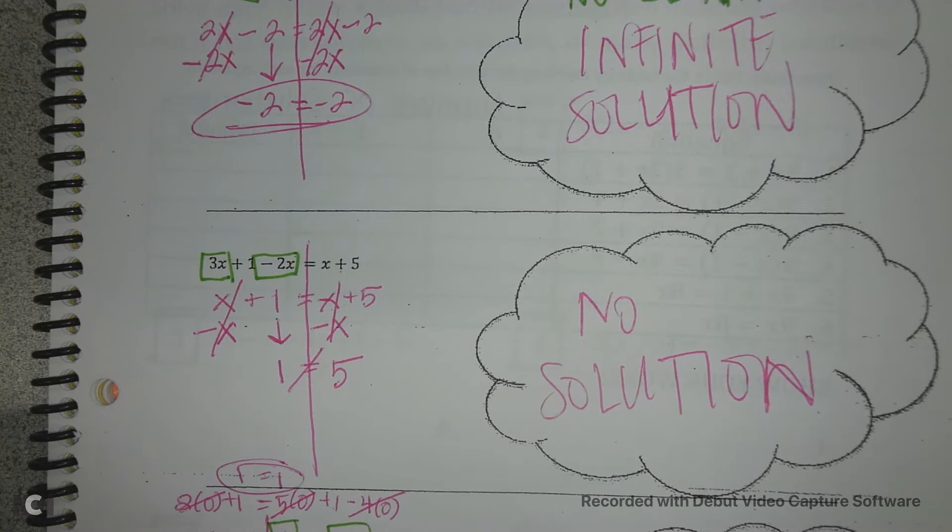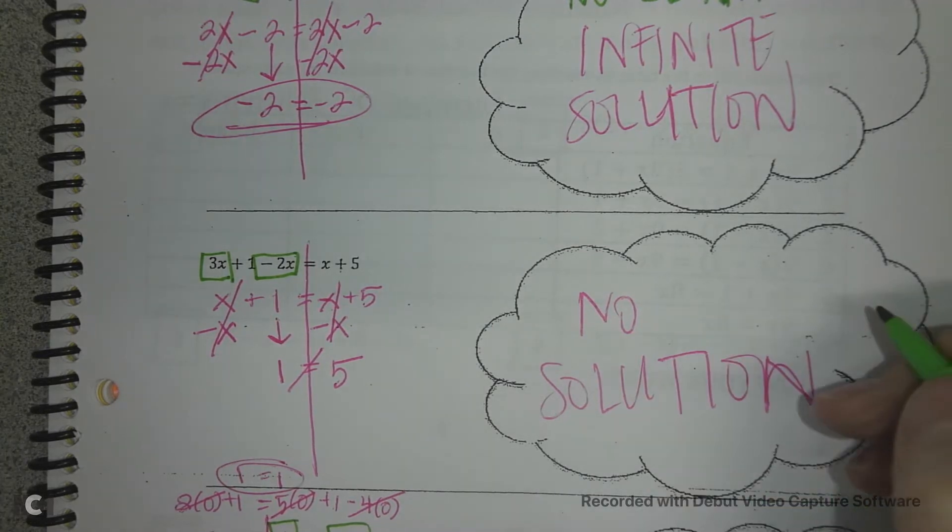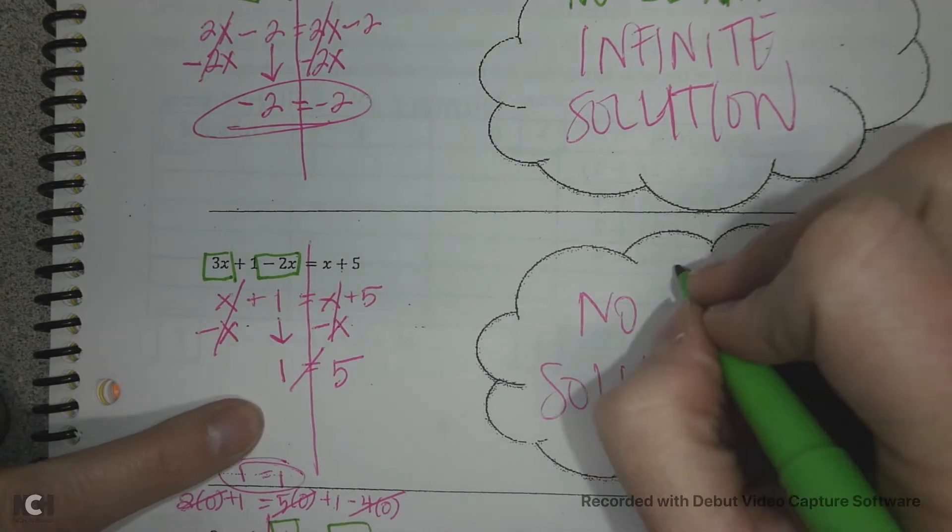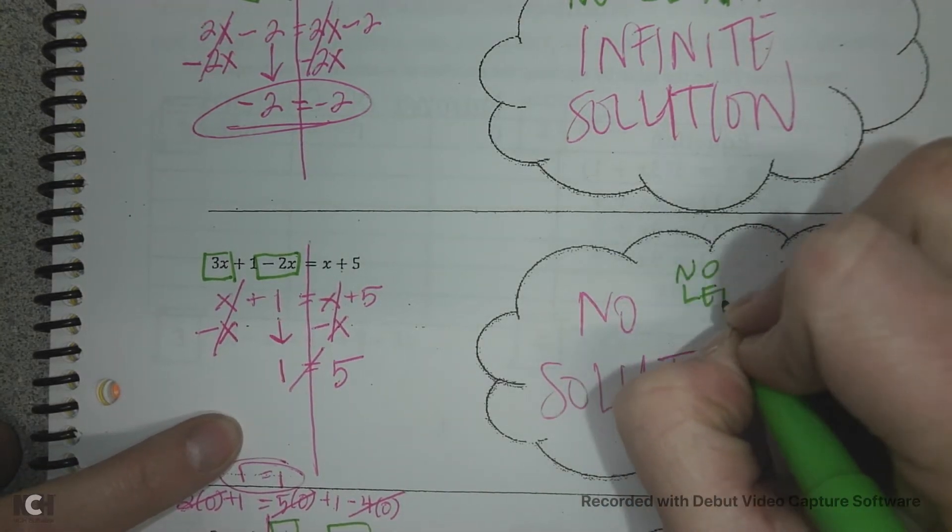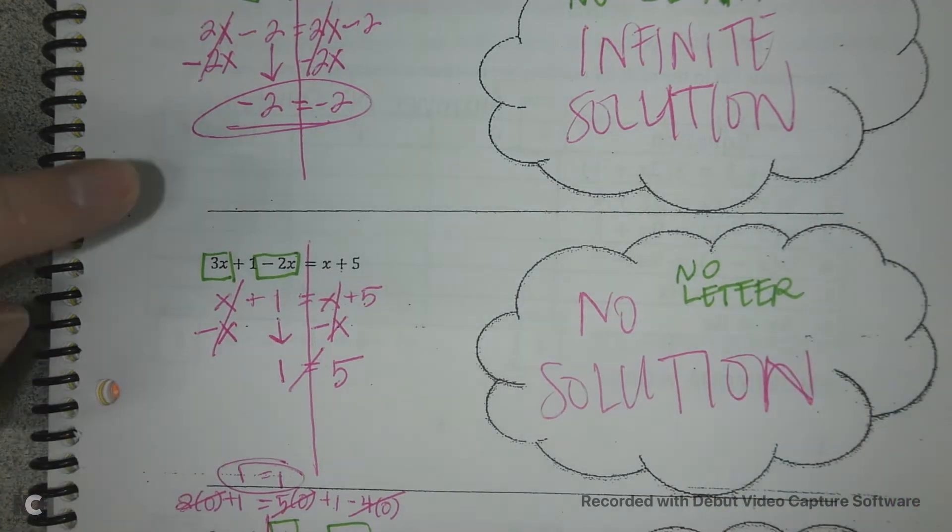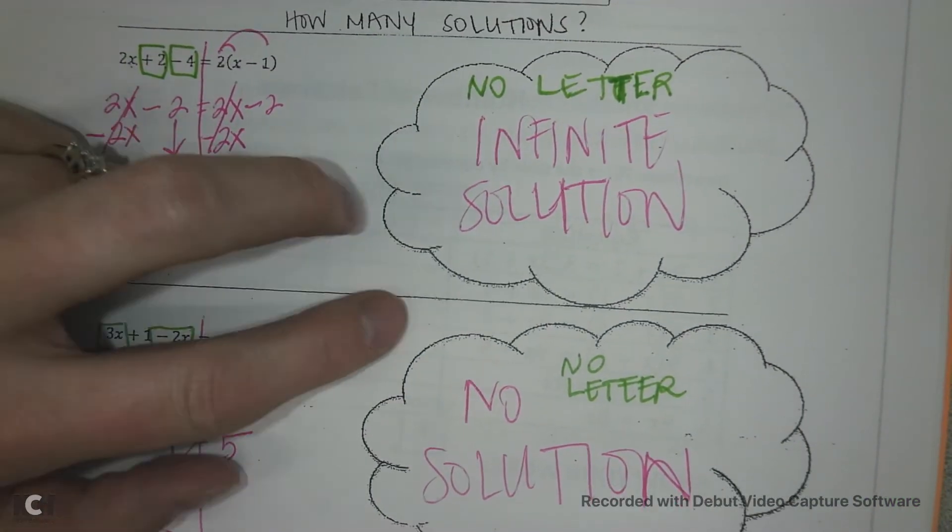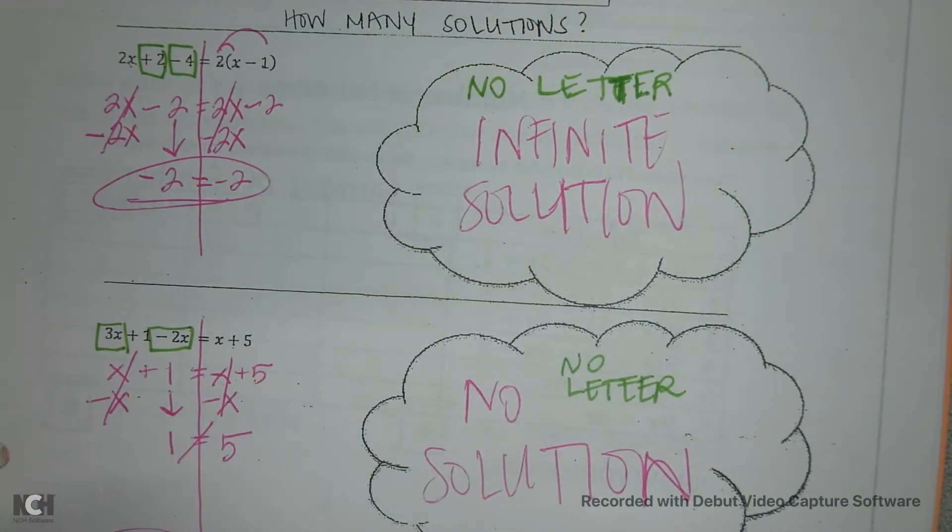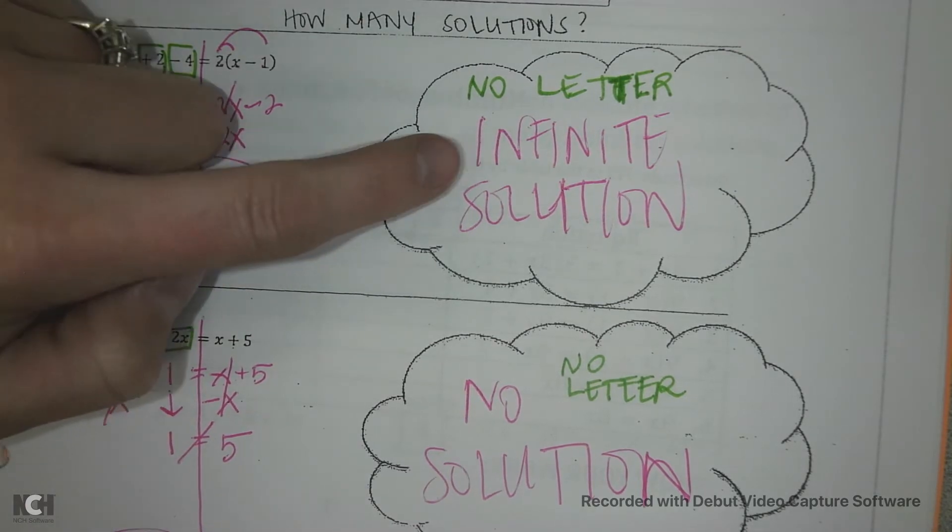As long as you put the same number in each time, the left side will never equal the right side. So this is a no solution. And notice we also have no letter. So when we have our two special cases, they both don't have a letter in the end when you're solving.